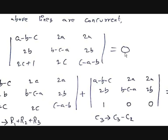To solve this, notice we have 2c + 1 in the third row. If we had just 2c it would be easier. Using a determinant property, when each element in a row is expressed as a sum of two terms, you can split the determinant into two determinants. So the third row [2c+1, 2c, c-a-b] splits: the first determinant has [2c, 2c, c-a-b] and the second determinant has [1, 0, 0] in the third row.